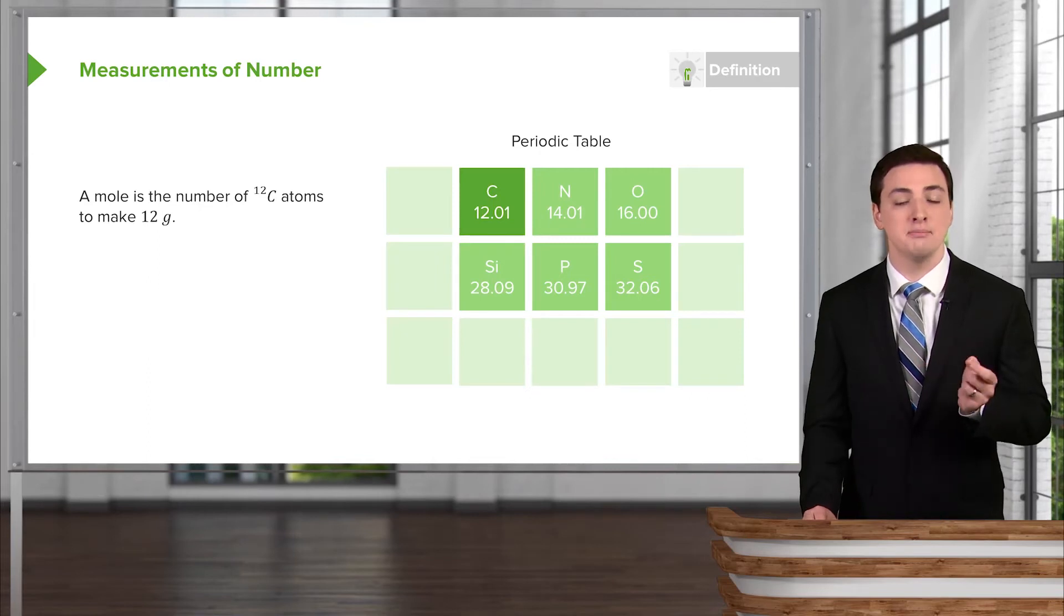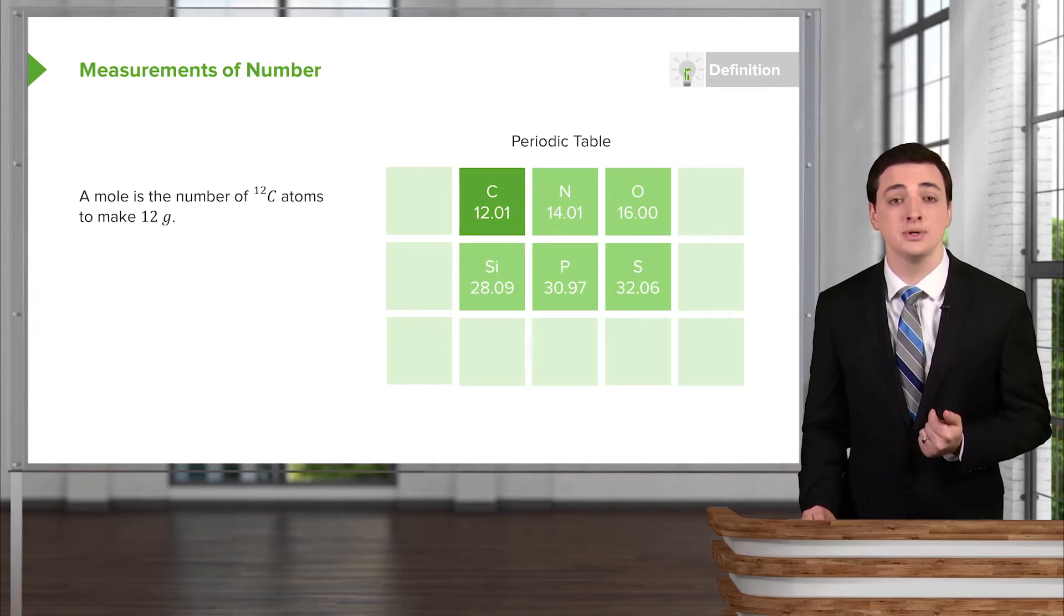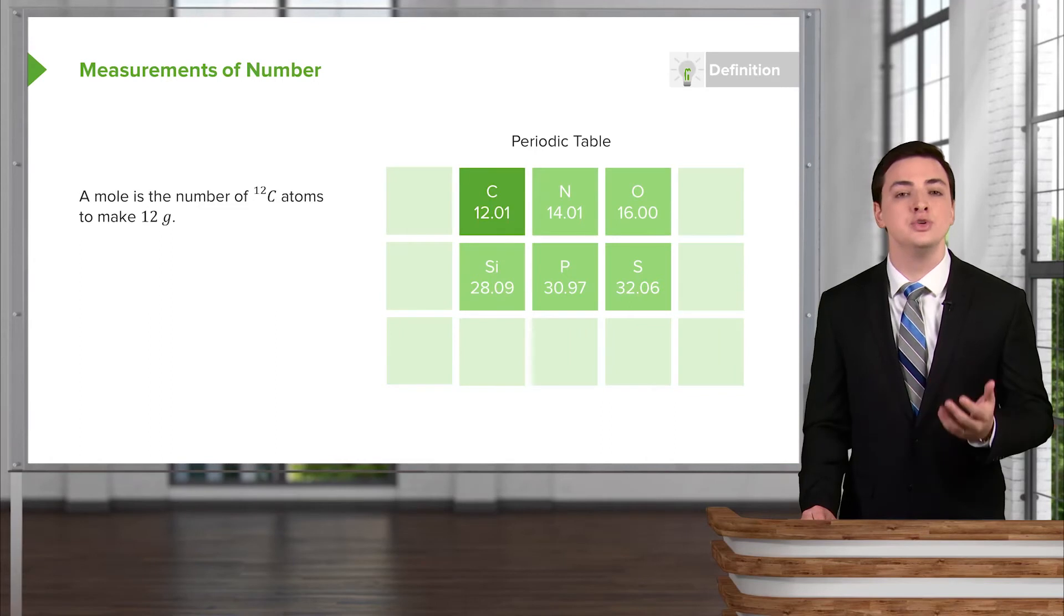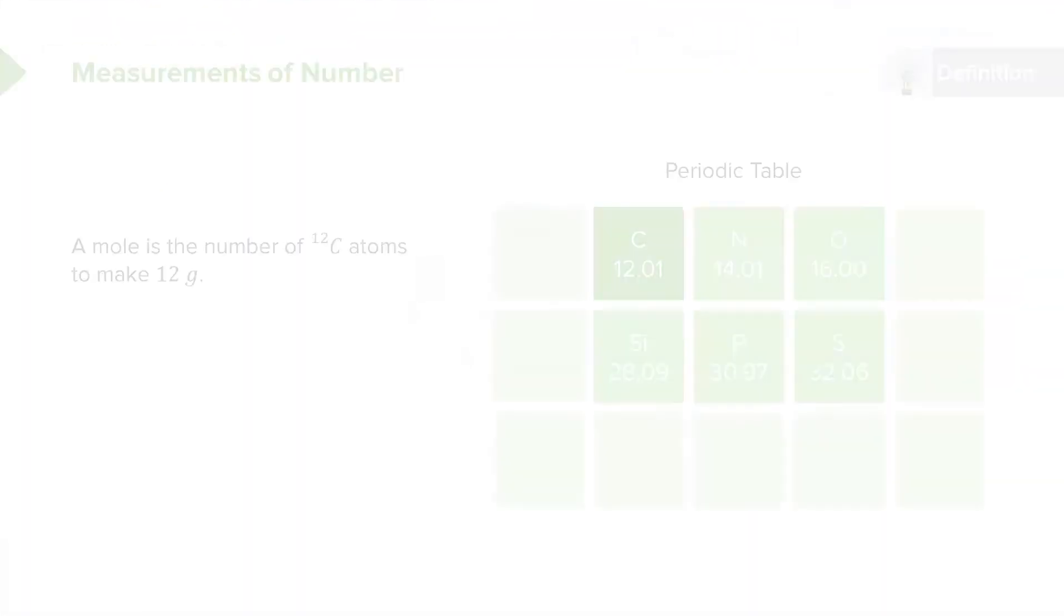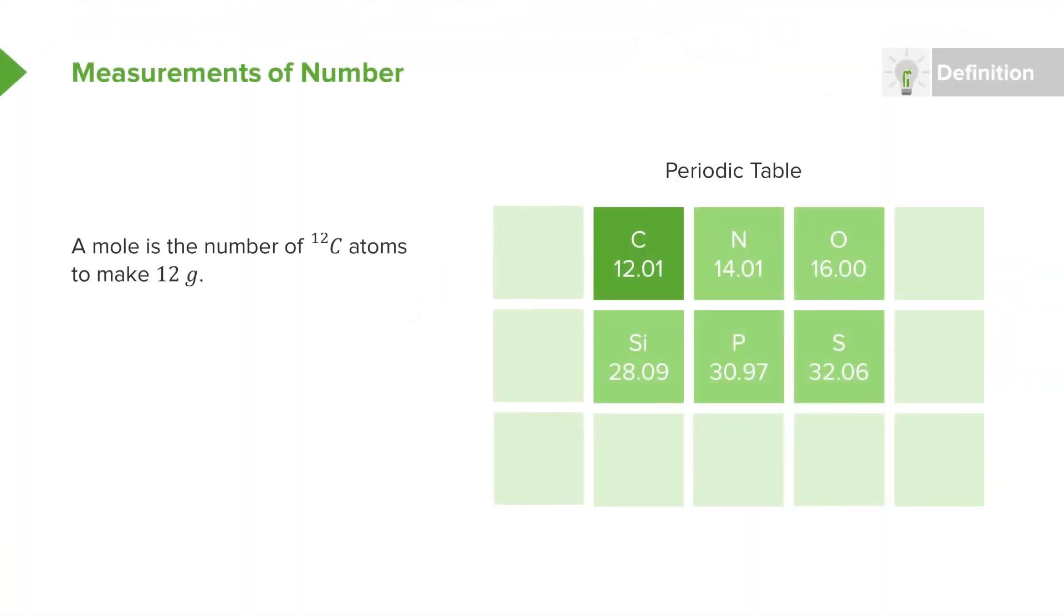So instead of just counting the number and using this very large number, what we do is we define a new unit called a mole. And we define a mole as the number of carbon-12 atoms to make up 12 grams of actual macroscopic visible substance. The number I've been referring to, this very huge number that it takes to make up anything that's big enough to be seen, is 6.022 times 10 to the 23rd objects.